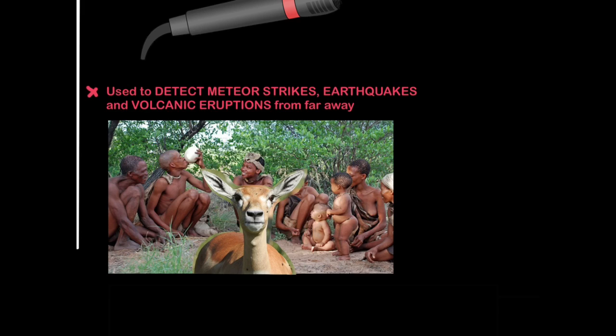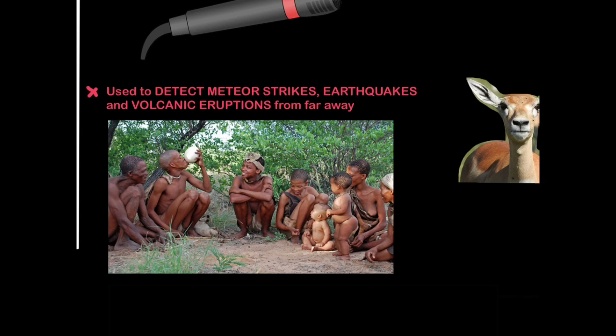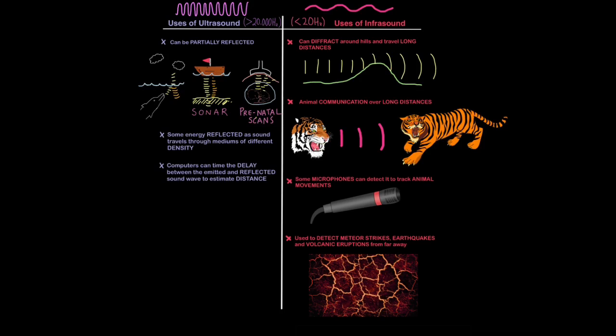You see, when an earthquake happens, it releases infrasound waves first before the damage is done. The animals, upon hearing these low frequency sounds, realize something bad is about to happen, so they scram, and humans follow pretty quickly.